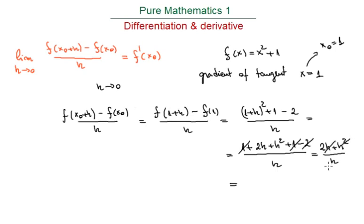We can simplify here by h, which gives us 2 + h. Now, we remember that h tends to 0. So when h tends to 0, this is equal to 2. What we got is the derivative of our function when x equals 1. This is actually the gradient of the tangent to the curve. Let's also visualize this.